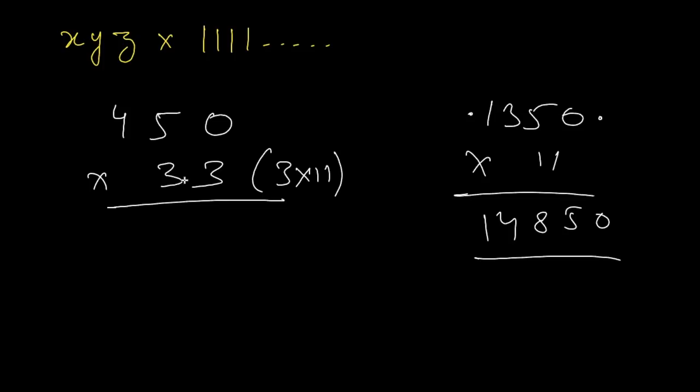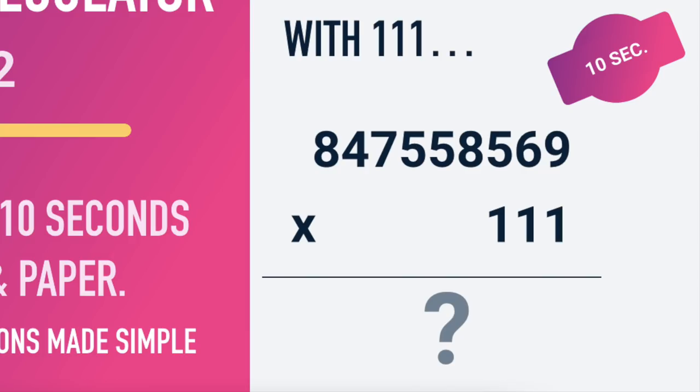Now to master this type of calculations you need a lot of practice. Keep on multiplying different numbers, different combinations. Keep on multiplying numbers with 55, with 44, with 11, 111 until and unless you can do it without using pen and paper under 10 seconds. That should be your target. Then only you'll start loving the beauty of Vedic maths. I hope that you can solve this now. Alright, see you in the next one. Thank you.